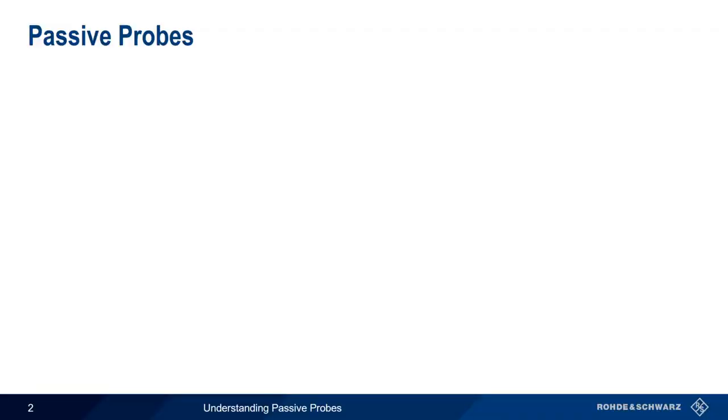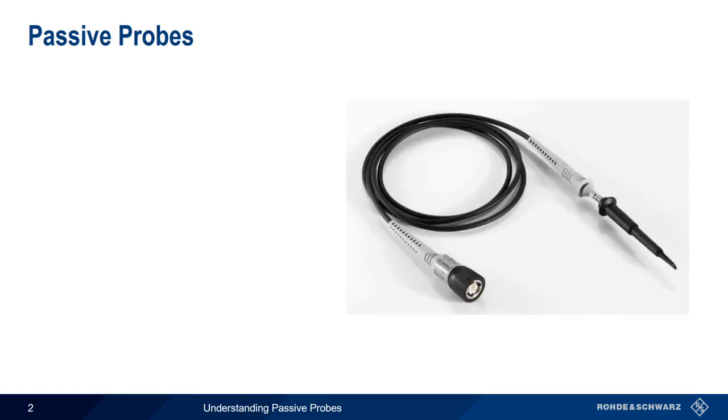Oscilloscope probes can be divided into two main categories, active probes and passive probes. As the name implies, passive probes are passive, that is, they have no active components and therefore can operate without power from the scope.